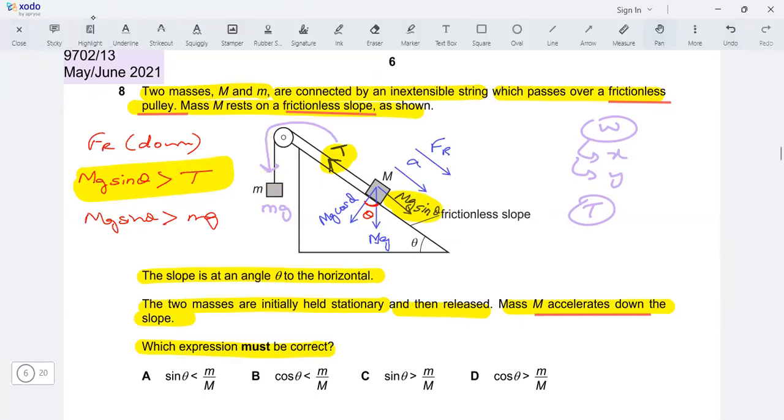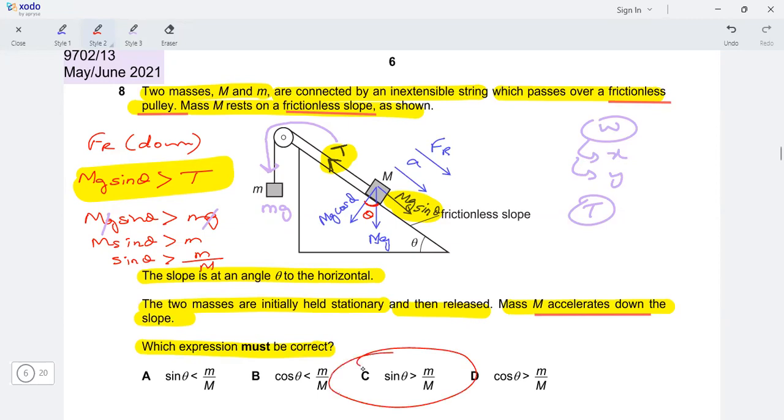Okay, so this is now my equation. What to do? Just let's simplify. G and G canceled out from both sides. Now we have M sine theta is greater than small m rearrange. Sine theta is greater than small m divided by capital M. And that's it. That matches option C. And that's your answer.